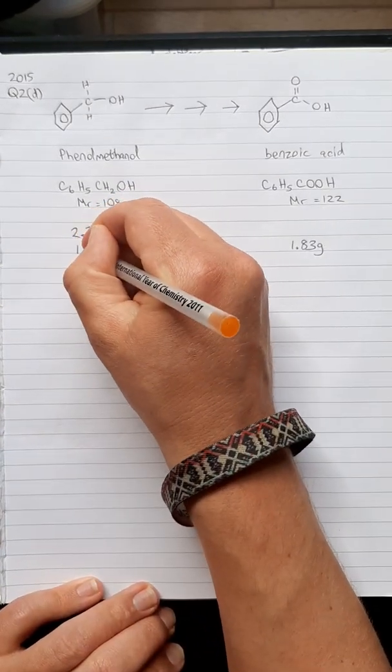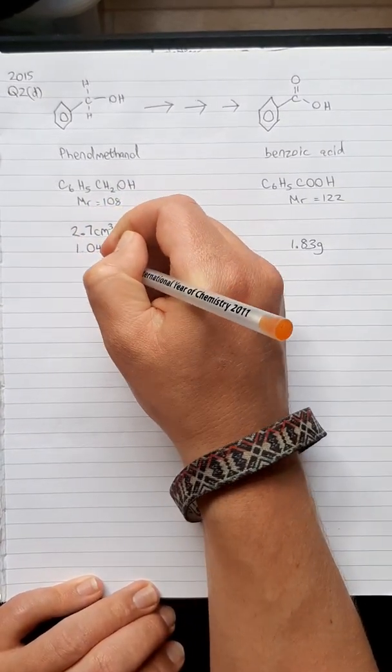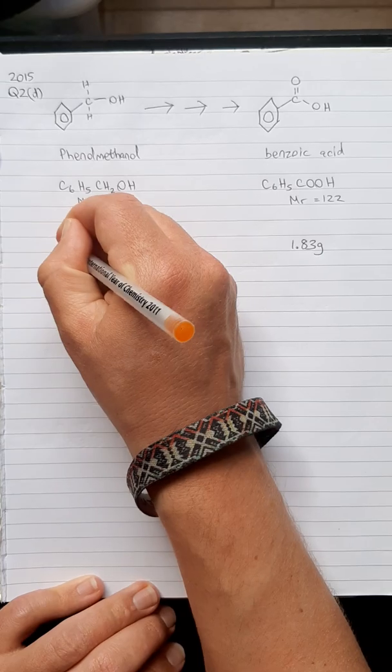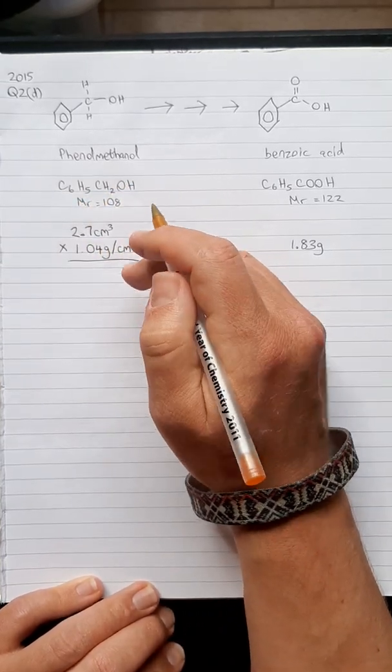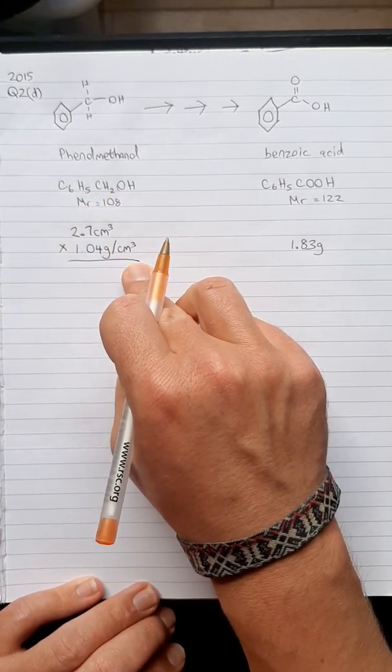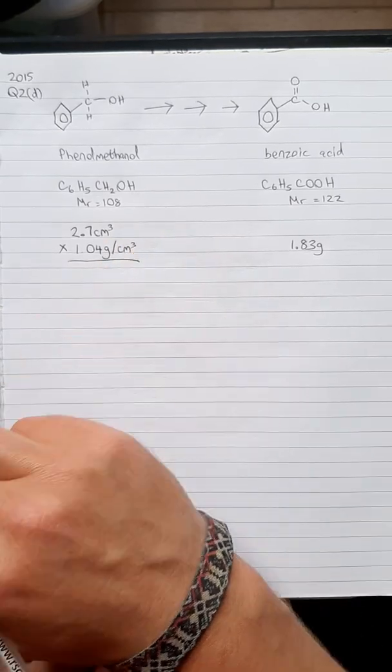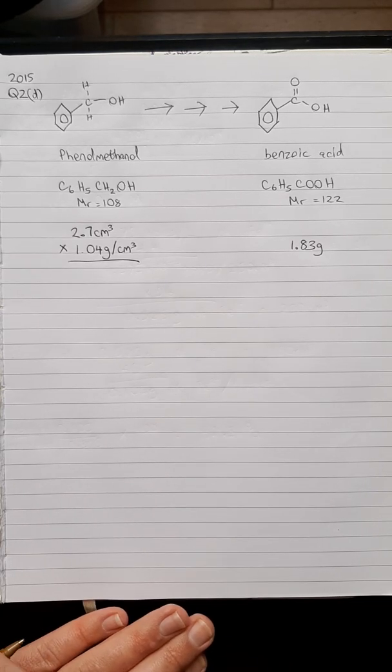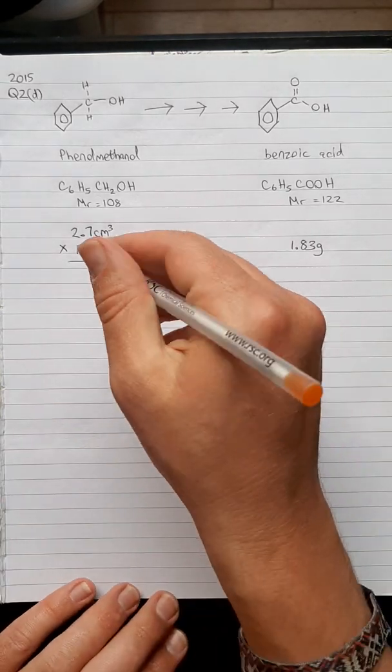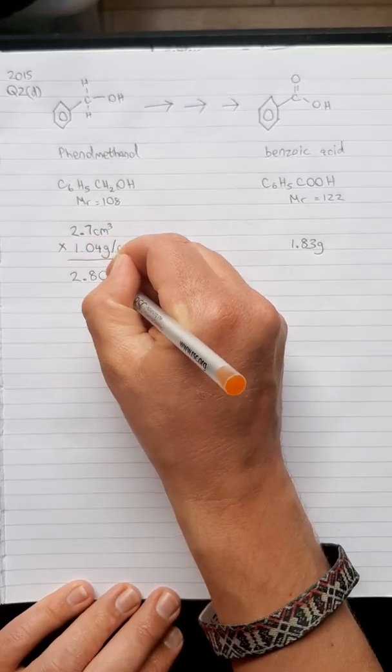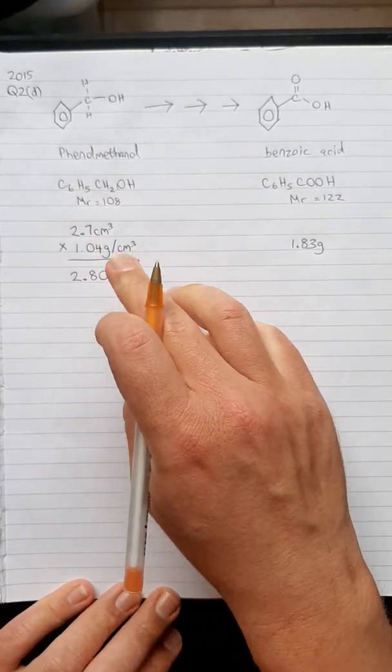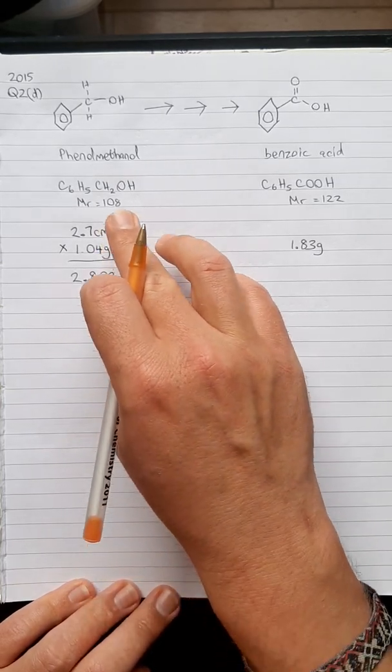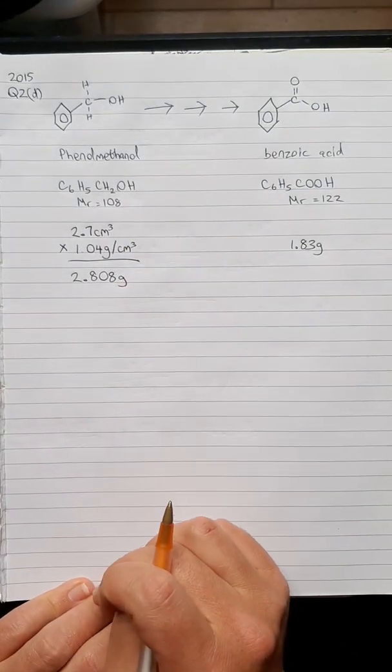The density is 1.04 grams per centimeter cubed. So we're going to convert this centimeters cubed into grams. Every centimeter cubed has a mass of 1.04 grams, so we'll multiply our 2.7 by 1.04 and we get 2.808 grams.